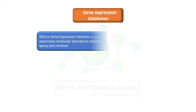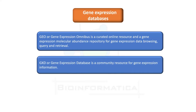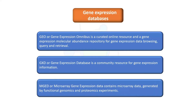Next is the Gene Expression Database. GEO — Gene Expression Omnibus — is a curated online resource and molecular abundance repository for gene expression data browsing, query, and retrieval. GXD — Gene Expression Database — is a community resource for gene expression information. MGED — Microarray Gene Expression Data — contains microarray data generated by functional genomics and proteomics experiments.